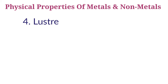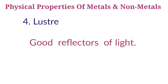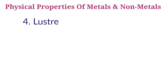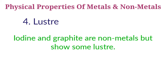Next property: lustre. Most metals are lustrous, meaning they have a shiny surface. This property is called metallic lustre. The shiny surface of metals makes them good reflectors of light. Because of their metallic lustre, gold, silver, and platinum are used for making jewellery and decorative articles. Glass mirrors have a thin coating of a metal like silver or aluminium at their back, which acts as a reflector of light. Non-metals do not have a shiny appearance; they are dull in appearance. However, iodine and graphite show some lustre.